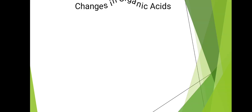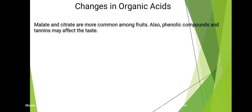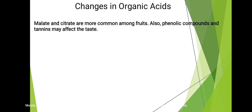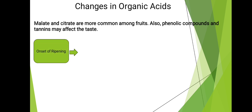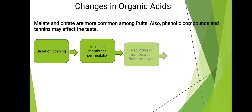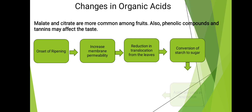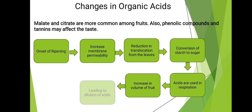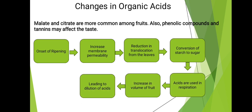Changes in organic acids: malate and citrate are most common among fruits. Phenolic compounds and tannins may also affect taste. At the onset of ripening, there is increased membrane permeability, reduction in translocation from leaves, conversion of starch to sugar, acids being used in respiration, and an increase in volume of fruit leading to dilution of acids.